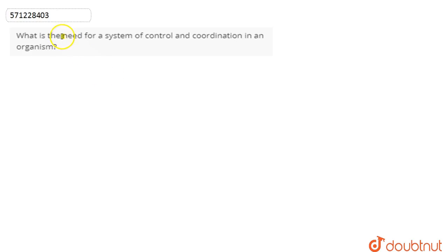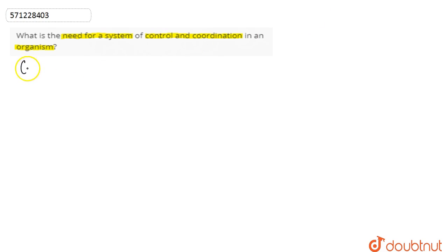In this question, we are asked: what is the need for a system of control and coordination in an organism? So first we will understand the meaning of control and coordination. We start with coordination first.